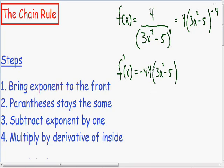Step number 2: the parenthesis stay the same. So the inside of the parenthesis, 3x squared minus 5, stays the same. Then we need to subtract the exponent by 1. Since there is a negative 4 exponent in our original function, negative 4 minus 1 is negative 5, there is going to be a negative 5 exponent in our derivative.